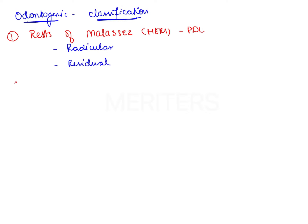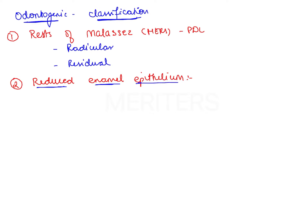The second category is derived from the reduced enamel epithelium. Once tooth formation is complete, the ameloblasts degenerate, forming a thin layer called the reduced enamel epithelium. Two cysts can develop from this: dentigerous cyst and eruption cyst.